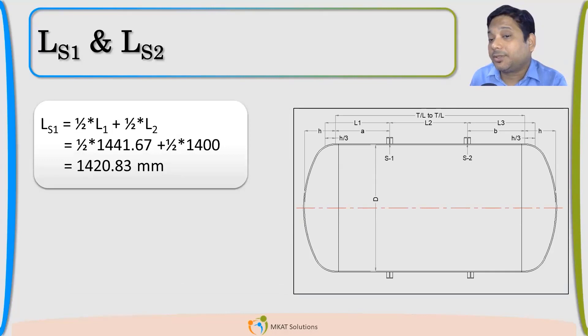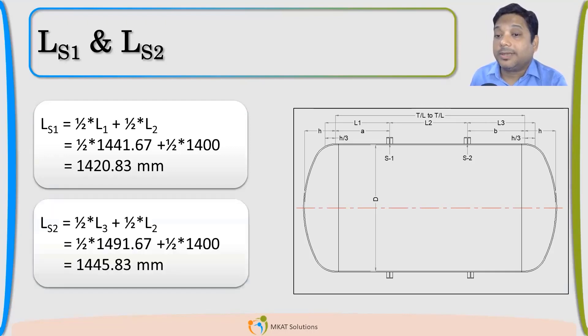Now next activity is to find LS1. Half of L1, half of L2. We studied that in the theoretical portion that the LS1 value is half of L1, half of L2. We can add these two. The next thing will be LS2. Half of L3, half of L2. That will become LS2. Now we have LS1, LS2 also available with us.